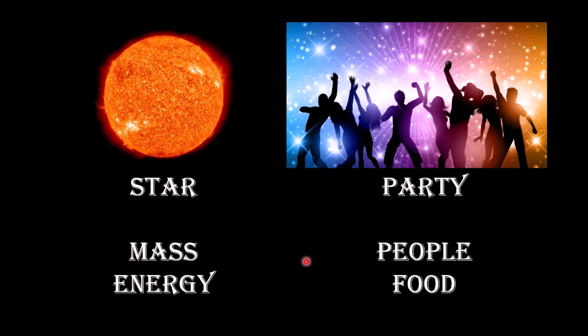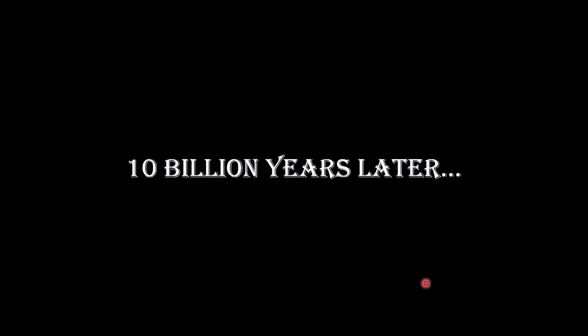So, we have our star. We have the mass of the star smashing into the same point. So, that creates that nuclear fusion to give us the energy we need. For the party, we have the people. We have the food. Let's party. 10 billion years later, I'm out of food. Everybody gets very unhappy. I'm out of food. What can we do?